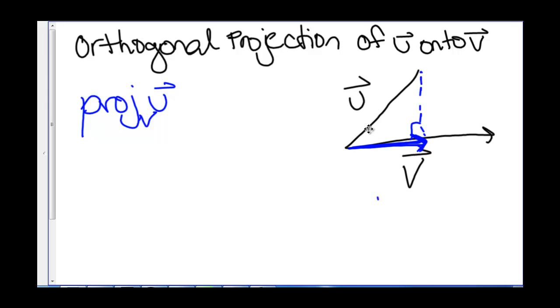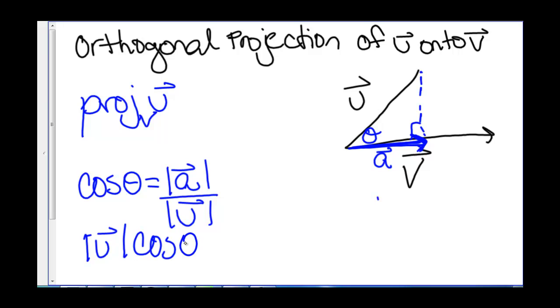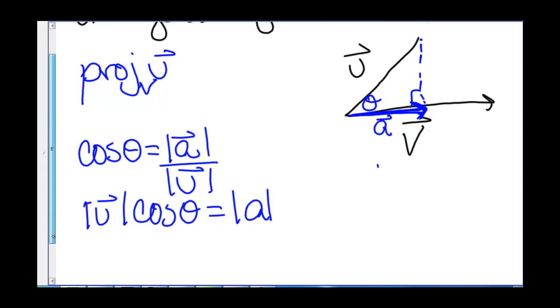We know if we have this angle theta, cosine of theta is going to be the length, we'll call this vector a for now, the length of a over the length of u. So the length of u times cosine of theta equals the length of a. So that tells me the length.